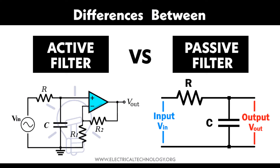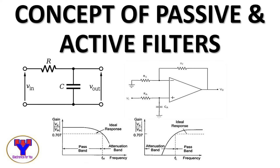Explanation of filters in electronics in 10 minutes. In electronics, a filter is a circuit that selectively allows signals of certain frequencies to pass while blocking or attenuating others. Filters are essential for managing frequency ranges in various applications, such as audio processing, radio communications, and power supply conditioning. Here's an overview of the types, functioning, and applications of electronic filters.